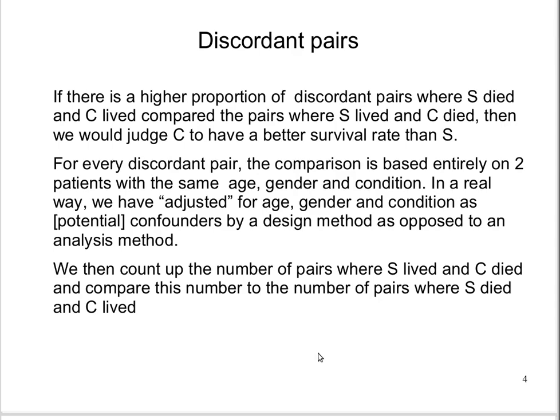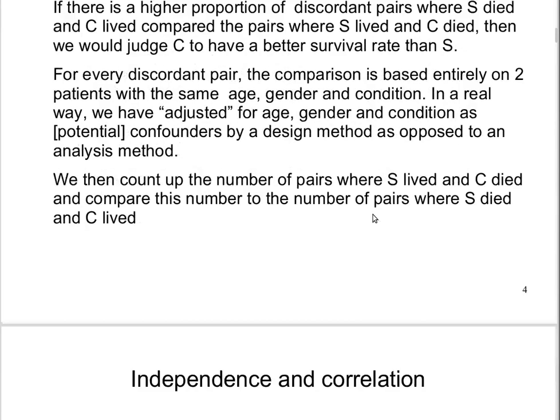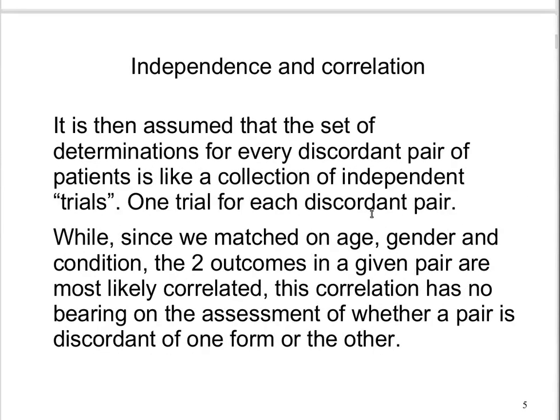We can count up the number of pairs where the surgery patient lived and the chemotherapy patient died, and compare that with the number where the surgery patient died and the chemotherapy patient lived. It is worth noting that statistical independence of measurements is generally lost when we match. The two measurements from a given discordant pair are correlated, since we matched on age, gender, and condition. For example, if the clinical condition was mild and patients were young, those two outcomes are obviously correlated.